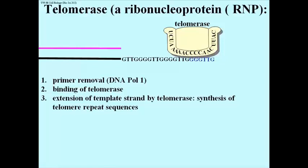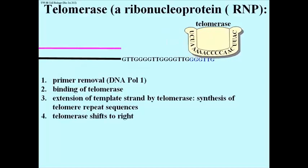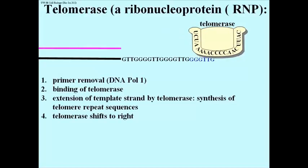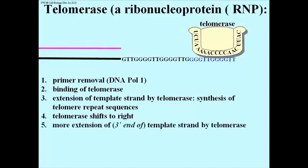Then the telomerase shifts to the right in this illustration. This is followed by another extension of the 3' end of the lower strand by telomerase. And this is repeated many times, creating a telomeric lower strand with a long trail of repeated short telomeric sequences.